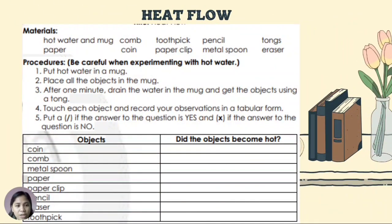For our next activity, you need to prepare the following materials: hot water and a mug, paper, comb, coin, toothpick, paper clip, pencil, metal spoon, tongs, and eraser. If not available, you may use other materials at home to perform the activity. You may ask the help of your parents, guardians, or any adult member of the family if needed.